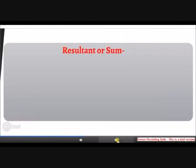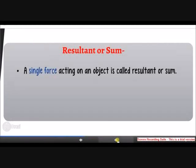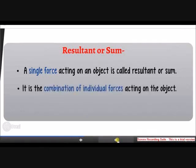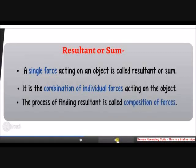The next thing is resultant or sum. A single force acting on an object is called resultant or sum. It is a combination of individual forces with the combined effect of all forces acting on the object. The process of finding resultant is called composition of forces.